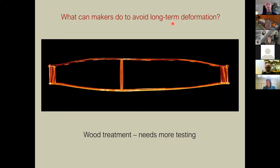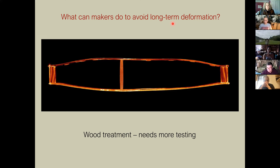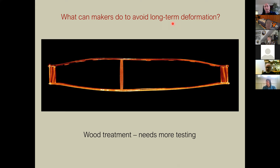Can we use wood treatment to avoid long-term deformation? All the studies seem to suggest yes. I've set up some tests with bass bar-sized wood beams — the equipment needed is just dial calipers, a surface plate, and a little jig. I'm curious, for example, whether torrefied wood would have better creep performance. It has much lower damping, which would suggest lower viscoelastic creep, making it potentially useful in place of carbon fiber for reinforcing.